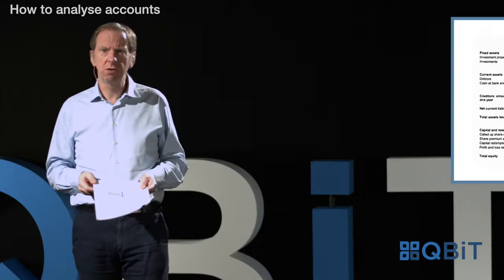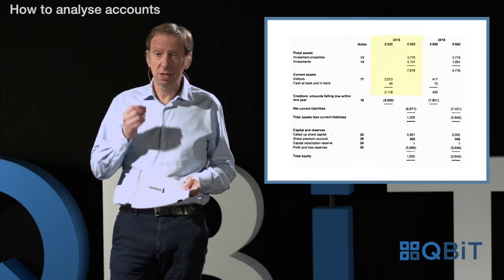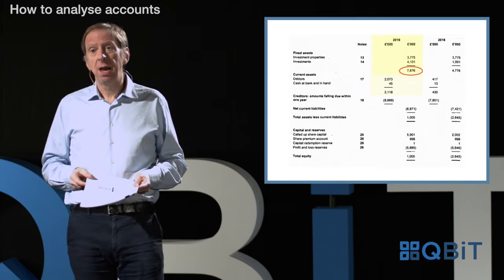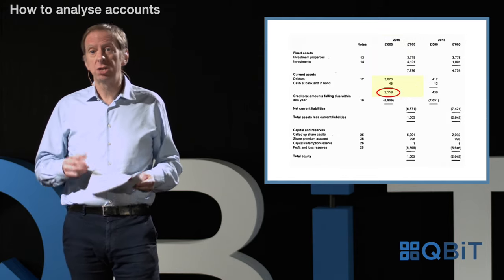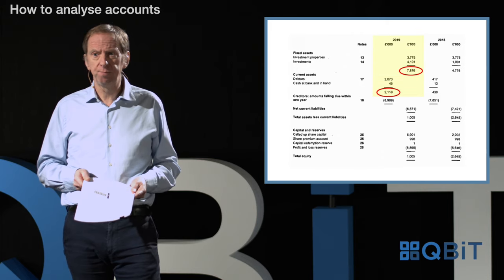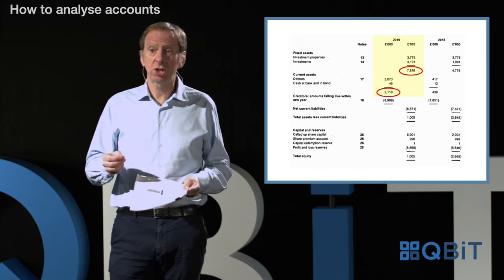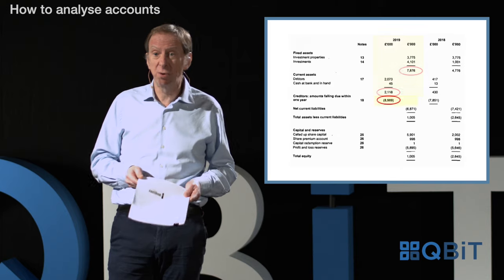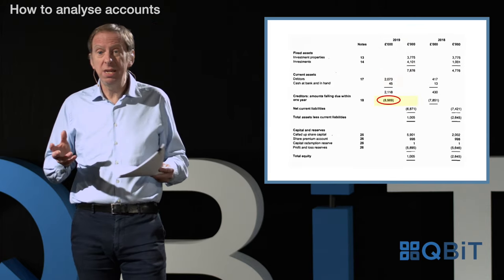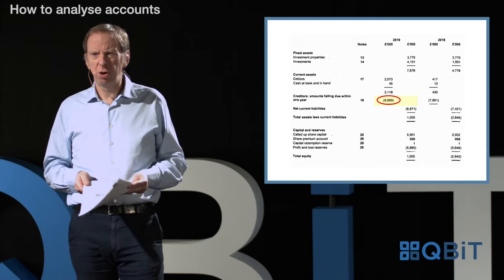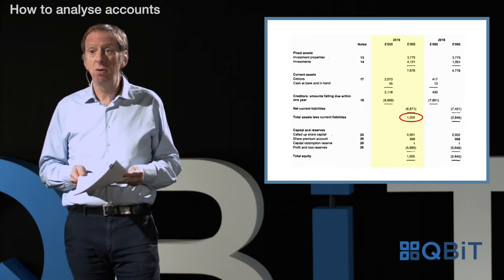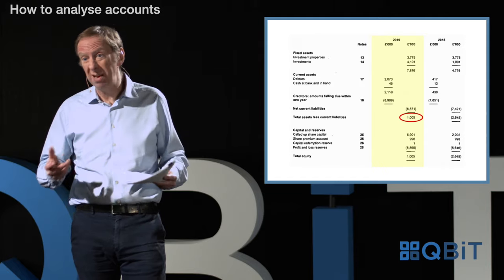The top part covers the assets: fixed assets and current assets. Let's think of them together as the total assets of the business. The fixed assets are £7.8 million and the current assets £2.1 million — together, total assets of £9.9 million. The liabilities section, helpfully on one line, is £8.9 million. So if we take the liabilities from the assets, we're left with a net figure at the bottom of £1,005,000 — about £1 million.